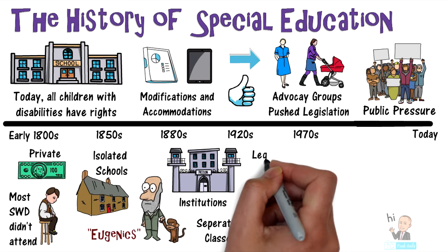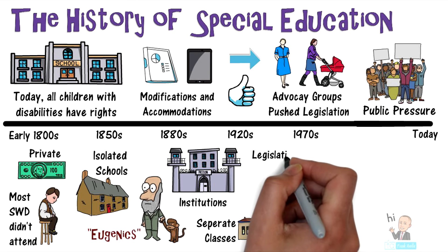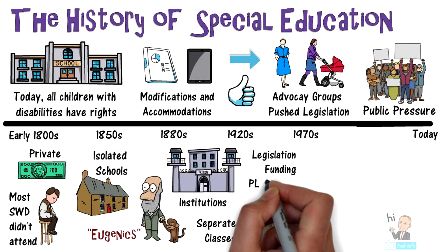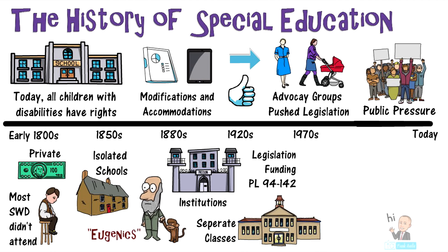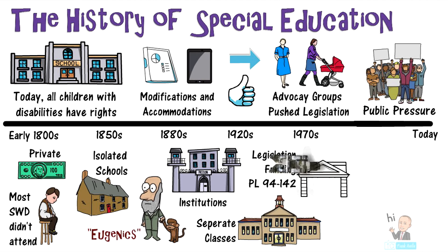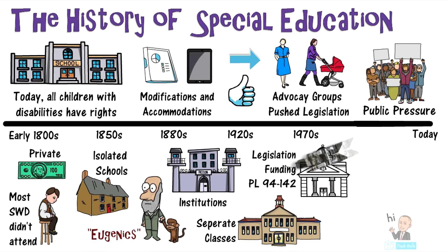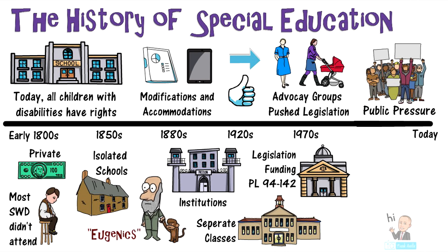Then to an important time, the 1970s, which is really where special education started. Laws were put in place for funding for special education students, and Public Law 94-142 was passed as the foundation for special education.